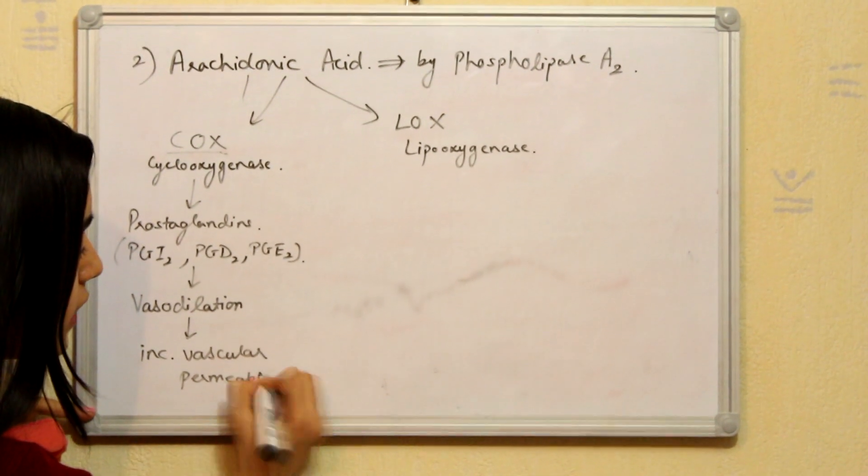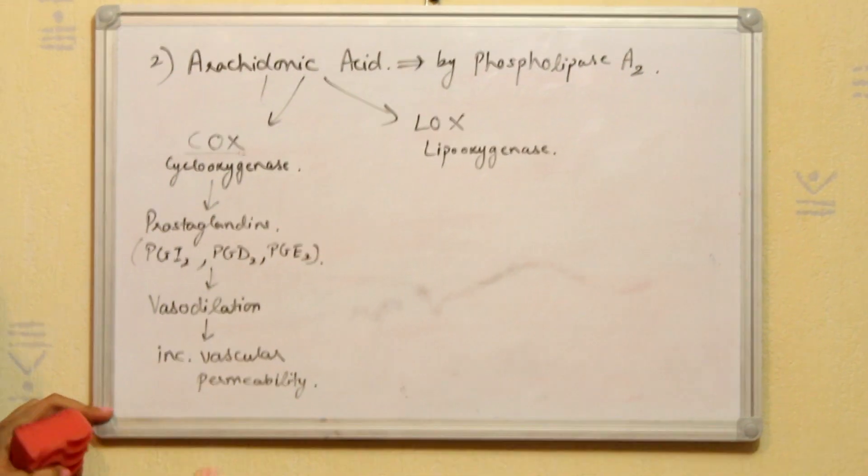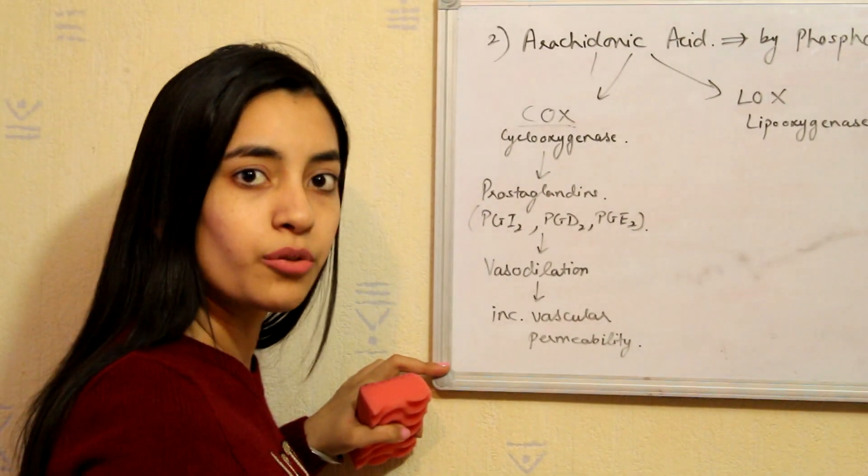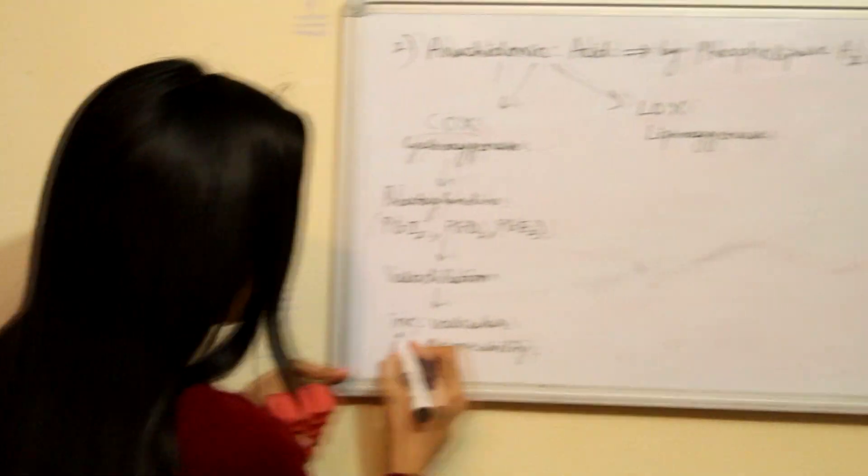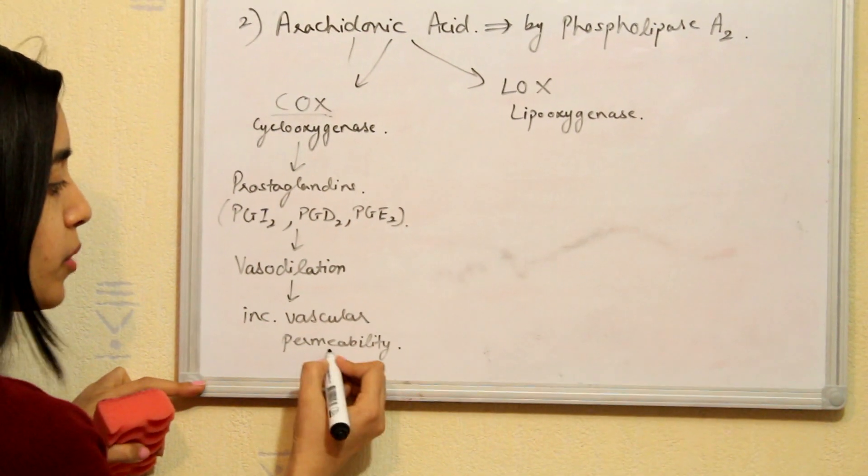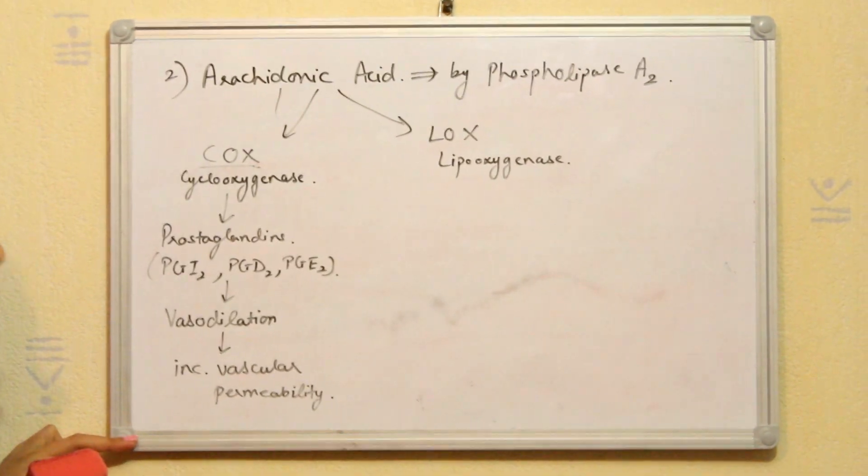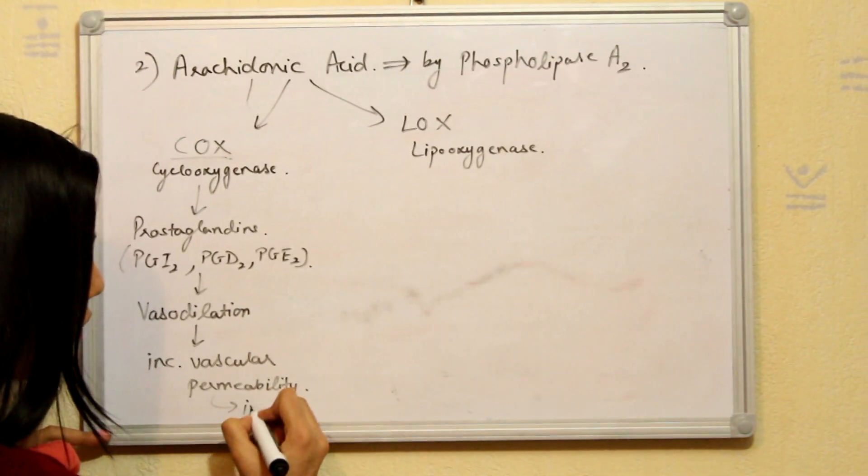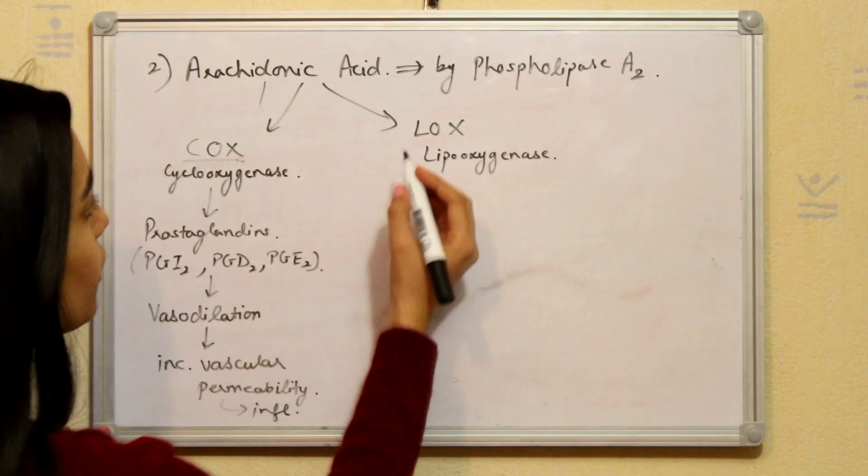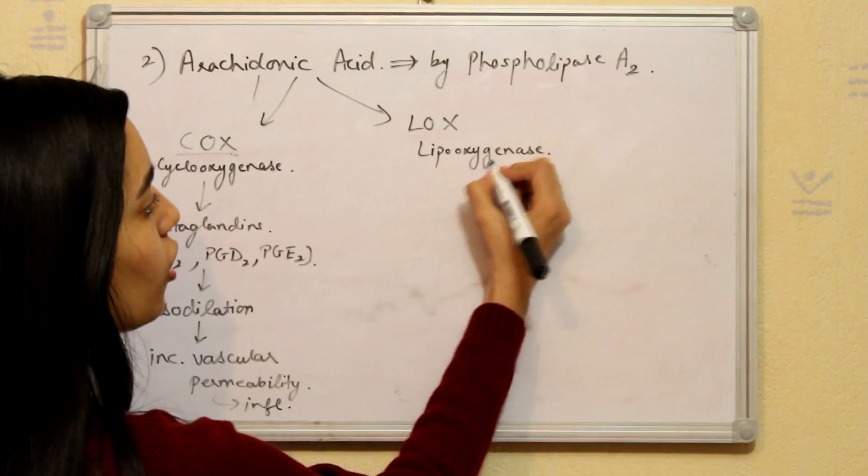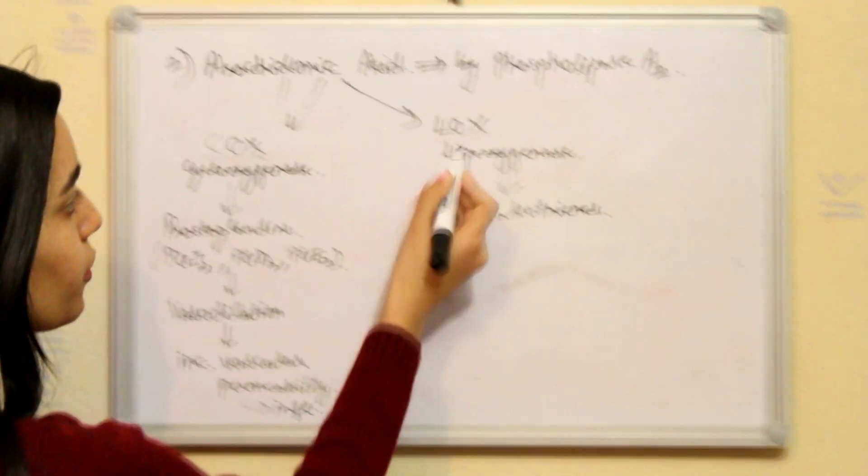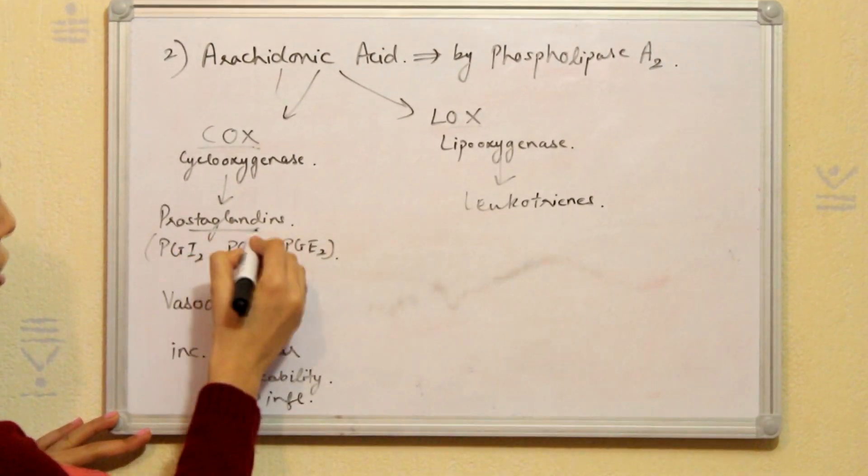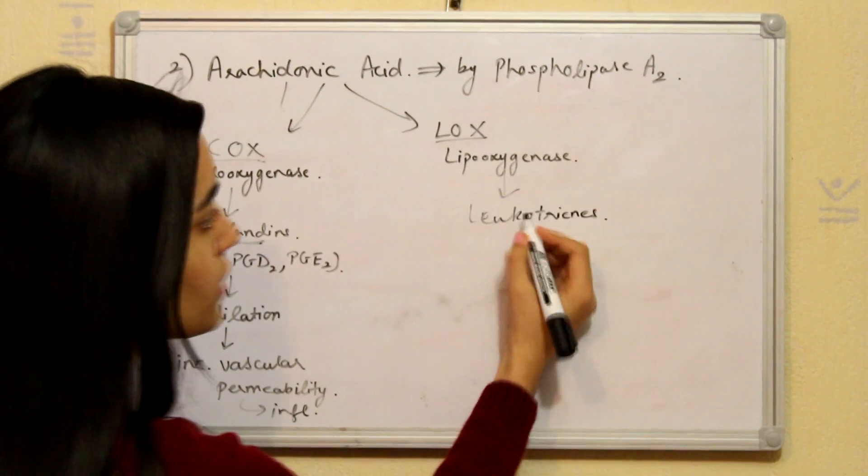Vascular permeability is when the vessel wall allows the small molecules like drugs, nutrients, ions or lymphocytes to enter into the blood vessel. So it will cause increased vascular permeability. When all of these things are allowed to go inside the vessel it will cause inflammation. And as compared to COX, LOX enzyme produces leukotrienes. We often get confused between COX and LOX. COX enzyme produces prostaglandins and LOX enzyme produces leukotrienes.